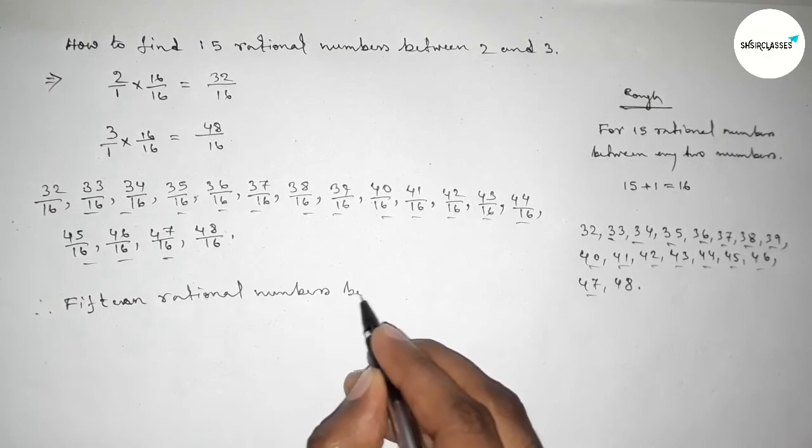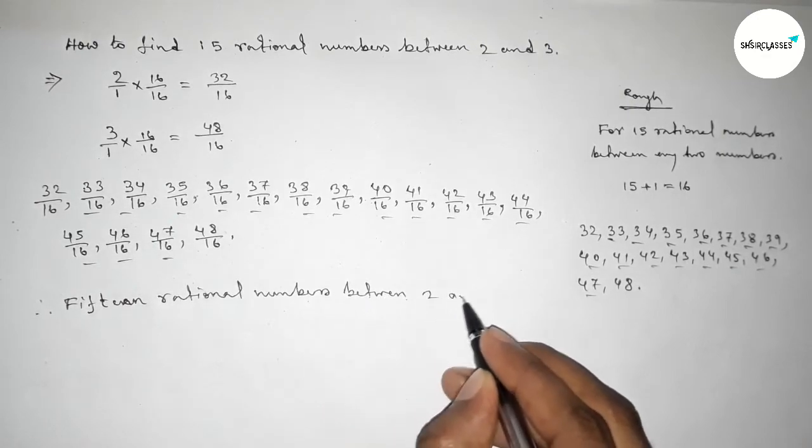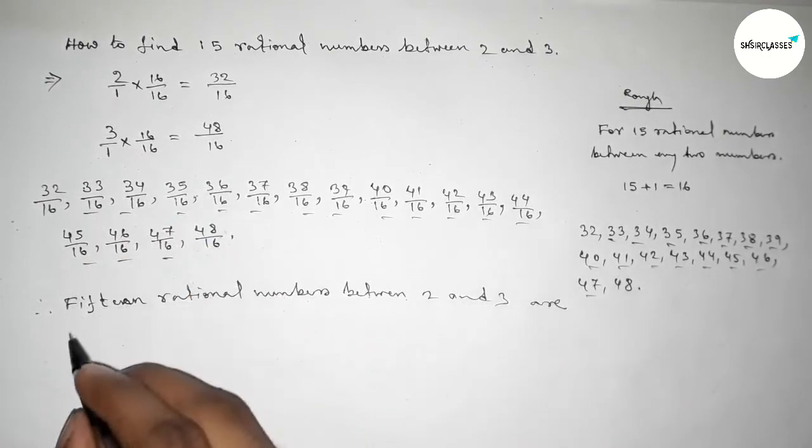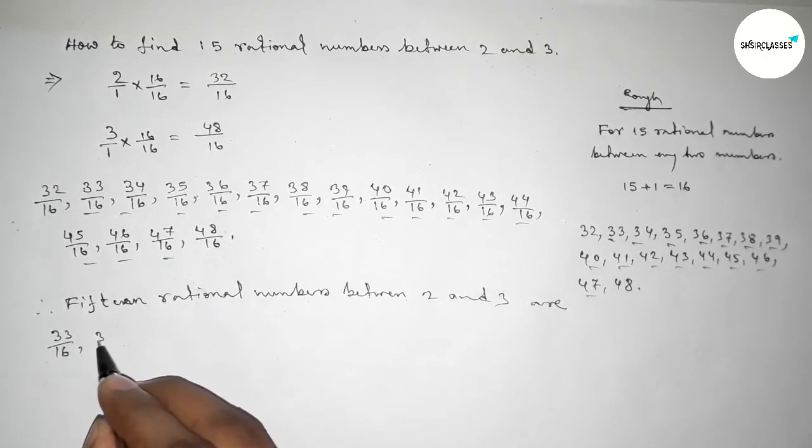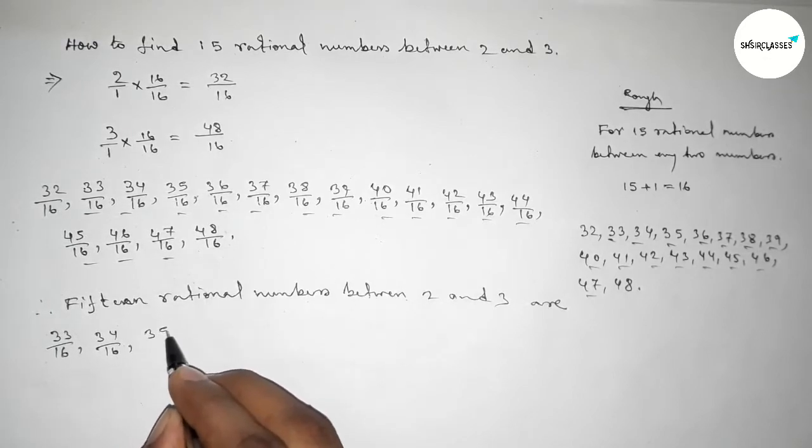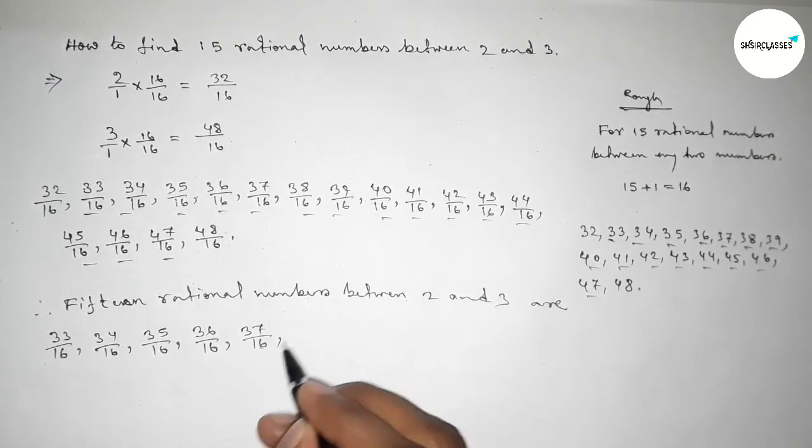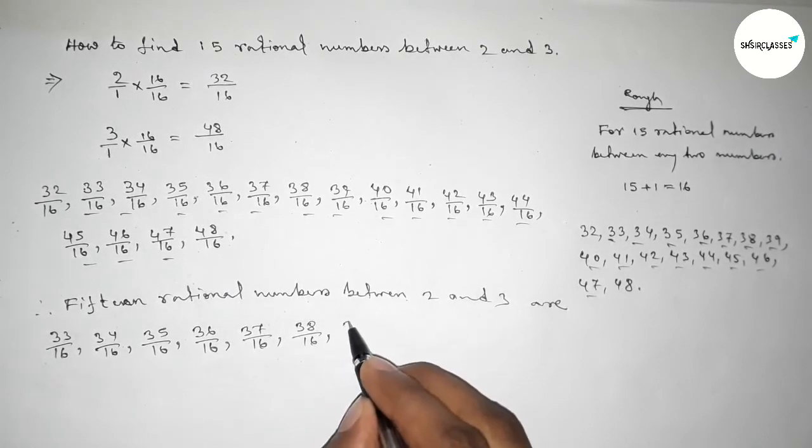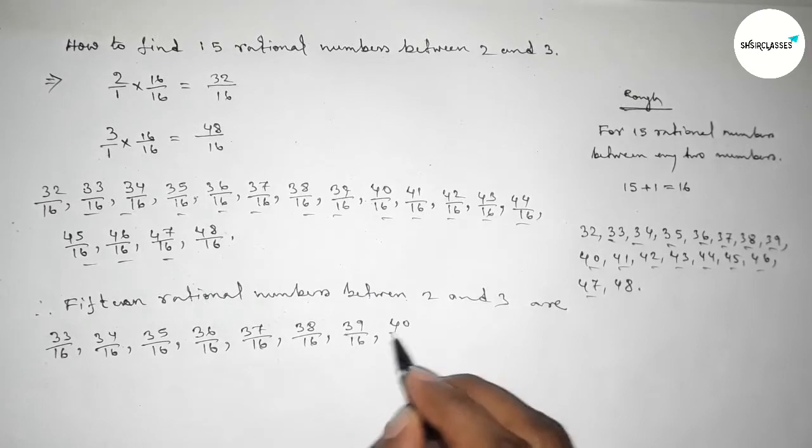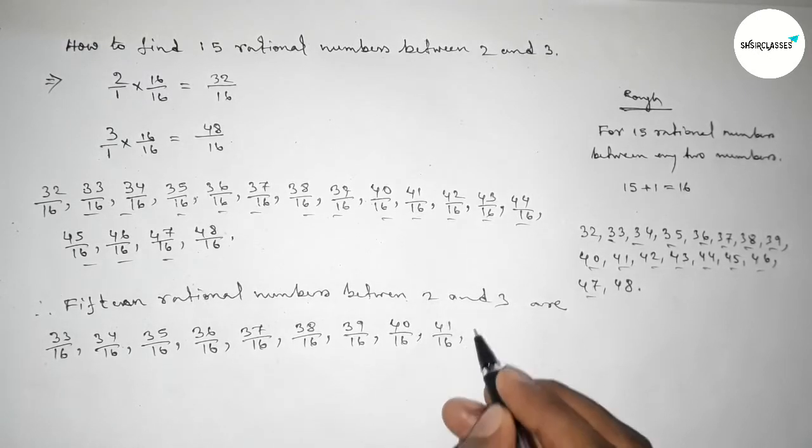So therefore 15 required rational numbers between 2 and 3 are: 33 over 16, 34 over 16, 35 over 16, 36 over 16, 37 over 16, 38 over 16, 39 over 16 up to 47 over 16.